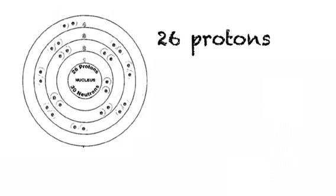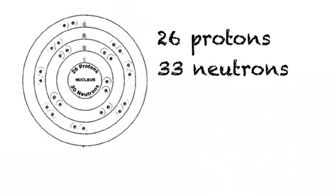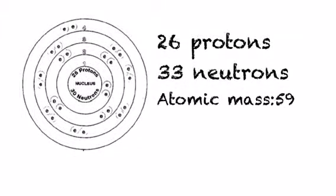Iron-59's symbol is Fe. It has 26 protons, 33 neutrons, and an atomic mass of 59.